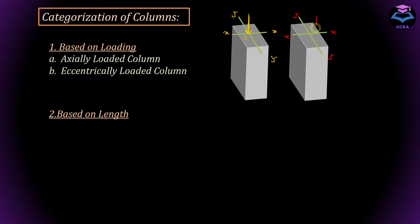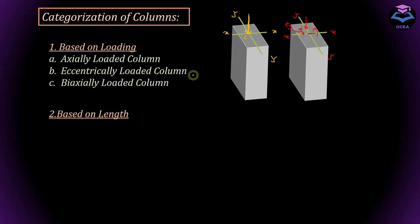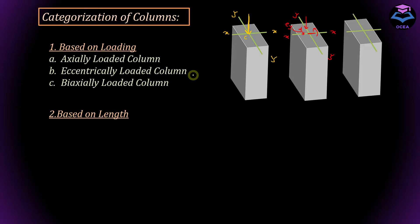If the eccentricity is along the x-axis it would produce a moment about the y-axis, and if it's along the y-axis it would produce a moment about the x-axis. Number three is the biaxially loaded column — in this column the load is applied in such a way that it produces moment about both the x and y-axis simultaneously. For instance, if the load acts at a point, it has a perpendicular arm with respect to both axes and creates moment about both axes at the same time.